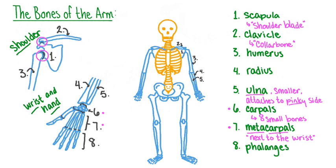The bones of the fingers are called phalanges. Each finger contains three phalanges, called proximal — meaning near — middle, and distal — meaning far. The thumb only contains two phalanges: a proximal phalanx and a distal phalanx. The word phalanx is the singular form of the word phalanges. This covers all the bones of the arm, from the scapula in our shoulder all the way to the farthest phalanx.